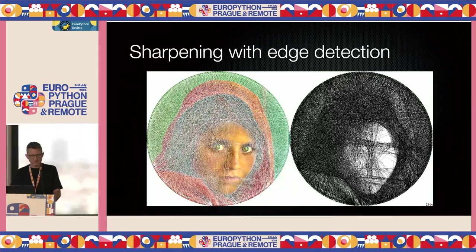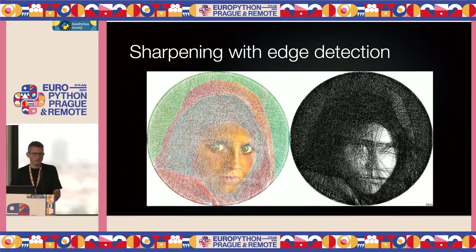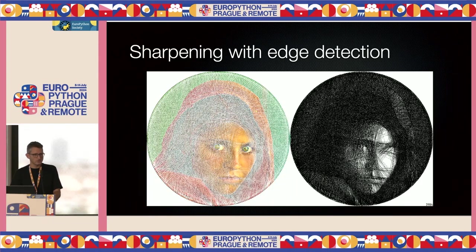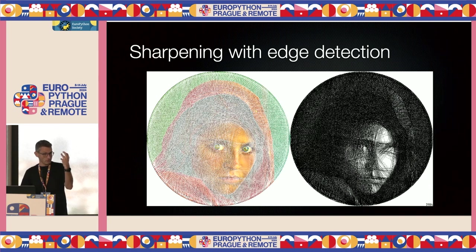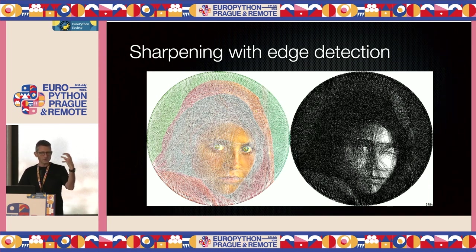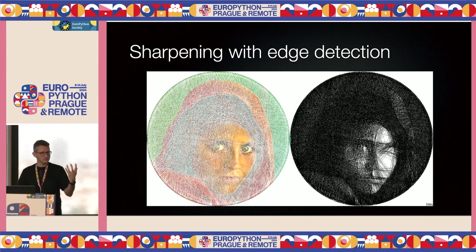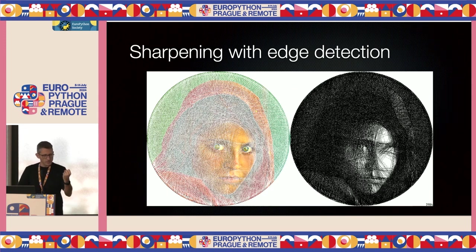You can definitely see the edges here — this simple, stupid edge detection works. You can even see one of her eyes, which really pops out, and that's what we want. The special quality of the image is the expression, so let's try to focus on that a bit more. We're almost done with black and white.